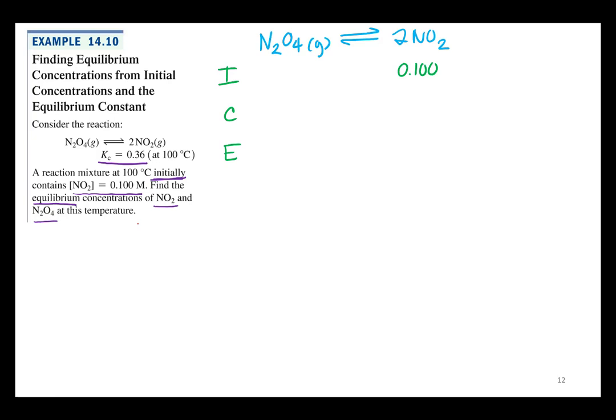And what else we got? Not much, huh? That's not a lot, but it's enough. Question? Just a quick question. How do you know that it's placed on that one? Good question. So how do I know we're going to put that 0.1 on the initial line for NO2? Well, it tells us that the reaction initially. So you know that's initial concentration. And that's for NO2, so I've got to put it for NO2.